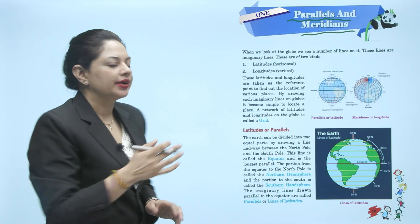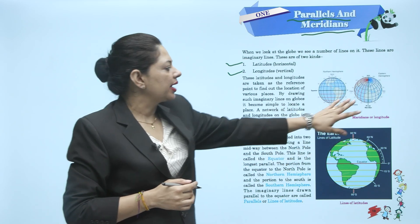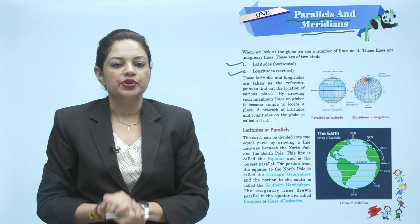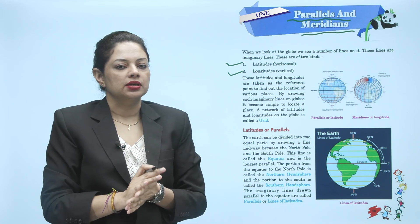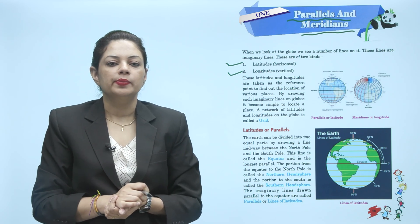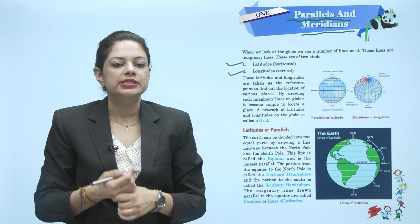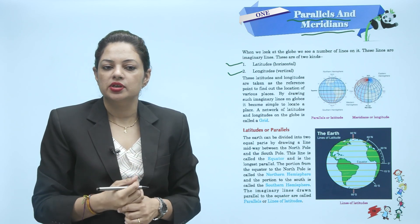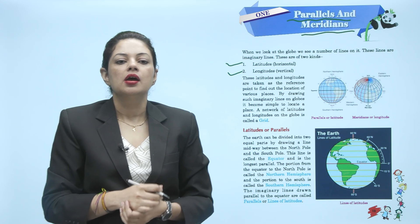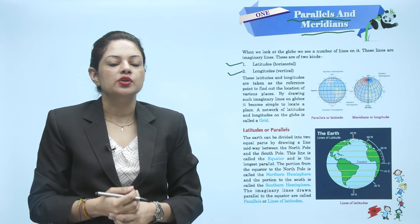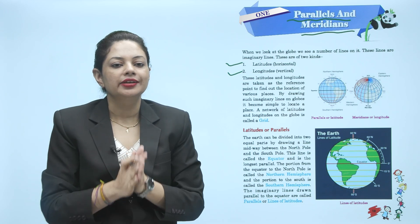These are of two kinds. First is latitudes and second is longitudes. The horizontal lines are called latitudes and the vertical lines are called longitudes. These latitudes and longitudes are taken as the reference point to find out the location of various places. By drawing such imaginary lines on a globe, it becomes simple to locate a place. A network of latitudes and longitudes on the globe is called a grid.